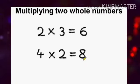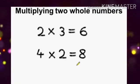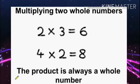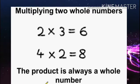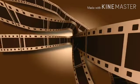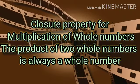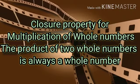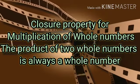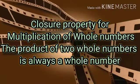What did you observe? 2 into 3 is equal to 6, which is a whole number, and 4 into 2 is equal to 8, again a whole number. So the product is always a whole number. The closure property for multiplication of whole numbers states that the product of two whole numbers is always a whole number.